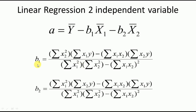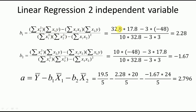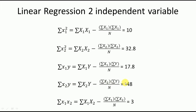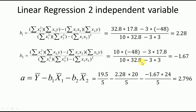Now we substitute these calculated values back into the b1 and b2 equations. Putting Σ(x2²)=32.8, Σ(x1y)=17.8, Σ(x1x2)=3, and Σ(x2y)=−48 into the b1 formula gives b1 = 2.28. Similarly, substituting Σ(x1²)=10, Σ(x2y)=−48, and Σ(x1x2)=3 into the b2 formula gives b2 = −1.67.